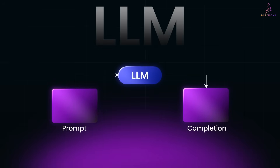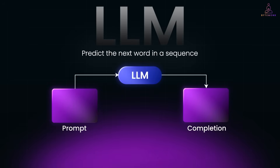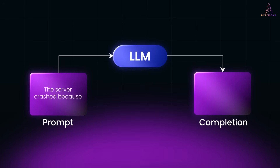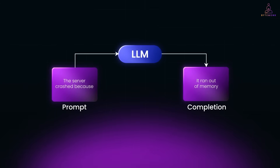At the heart of every LLM is a simple goal: predict the next word in a sequence. That's it. You give it a prompt like 'the server crashed because,' and it completes it based on probabilities learned from massive amounts of text. It might say 'it ran out of memory,' because that's a common pattern in logs, forums, or docs. This prediction mechanism powers everything from writing code and summarizing emails to simulating conversations. But they are not thinking — they are just continuing text in a way that looks smart. That's why precision matters: the way you frame a prompt directly impacts what you get back.